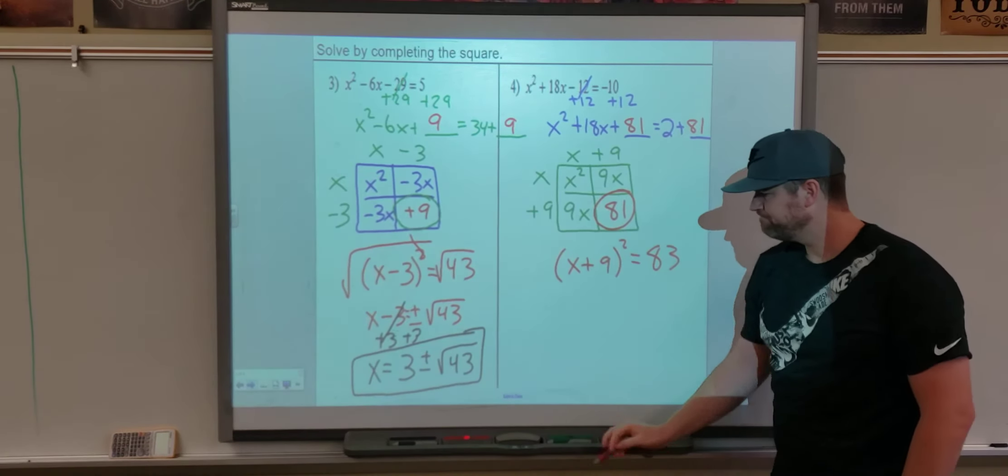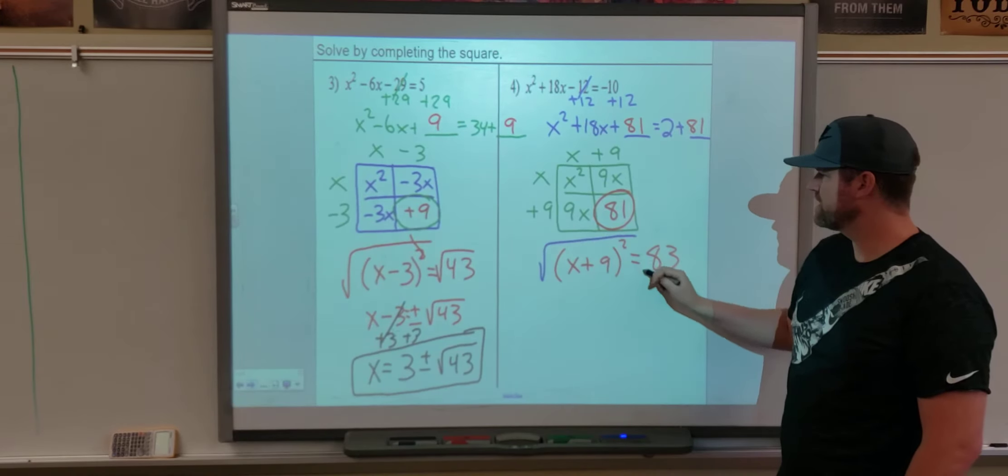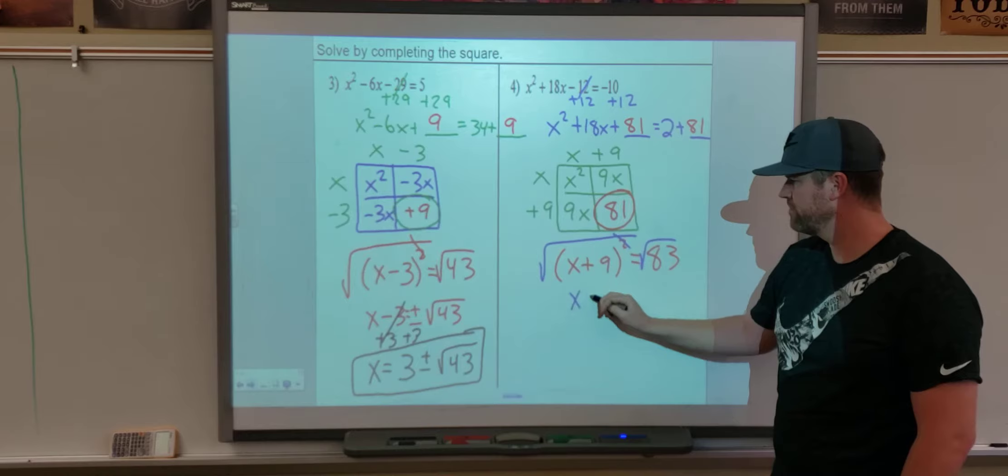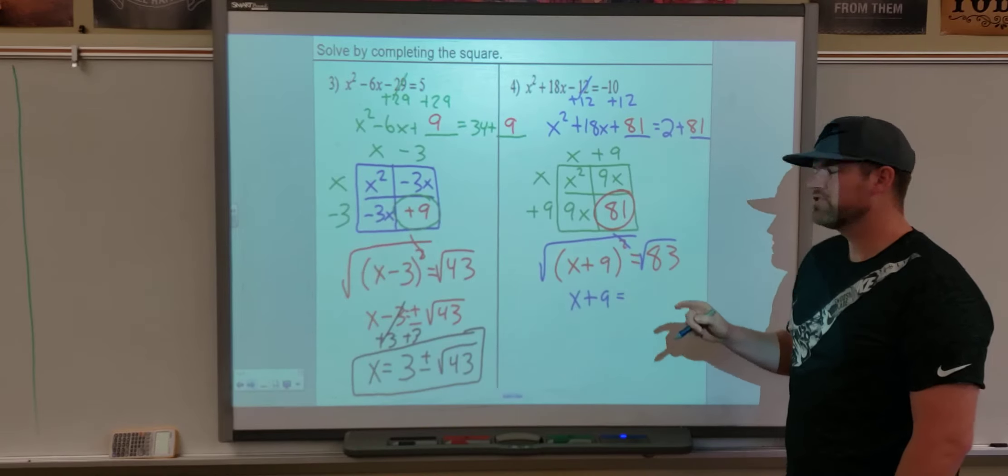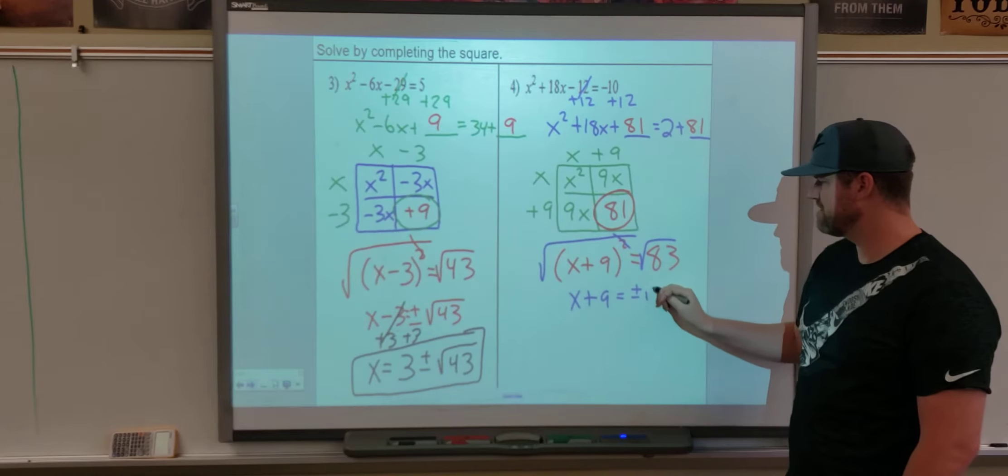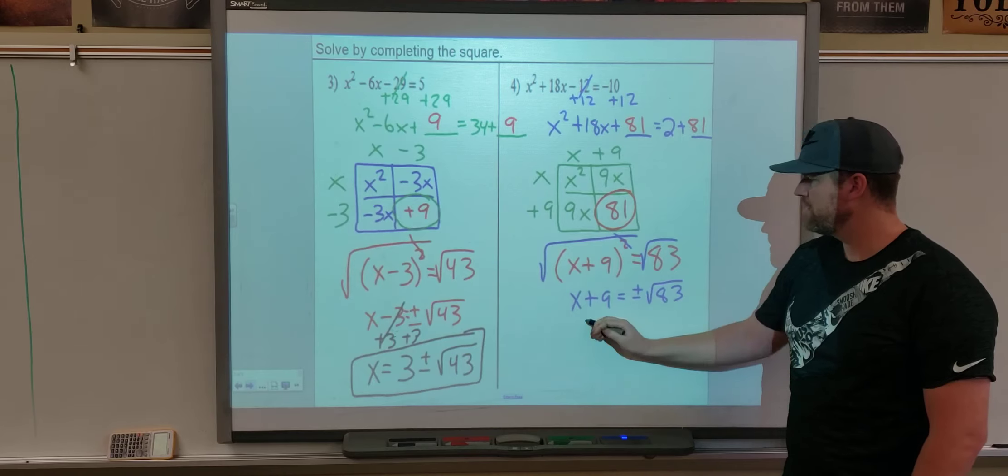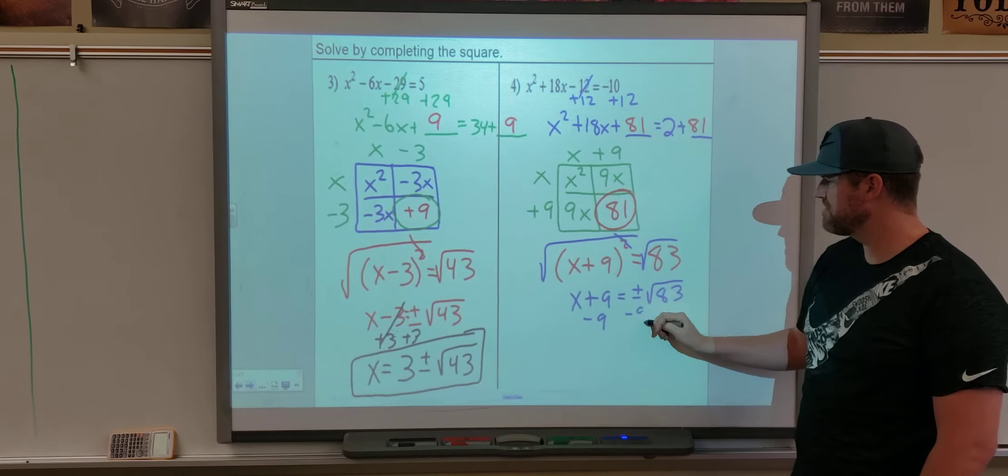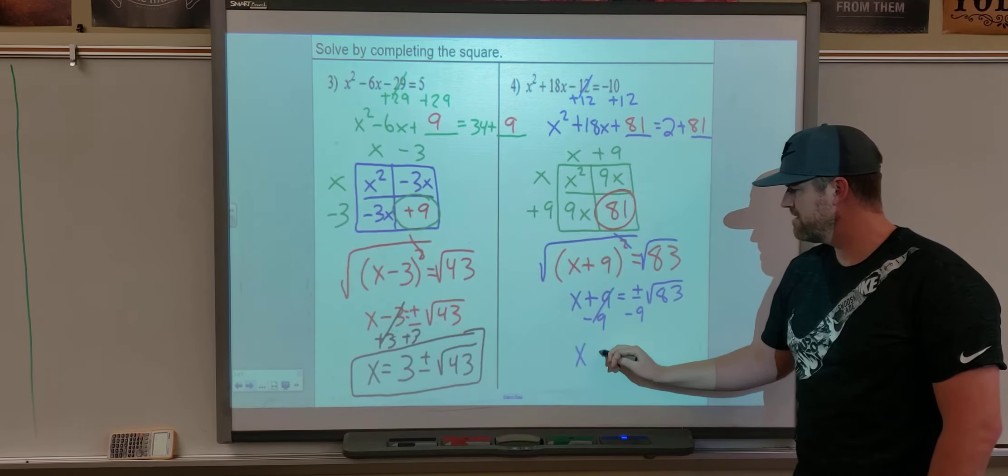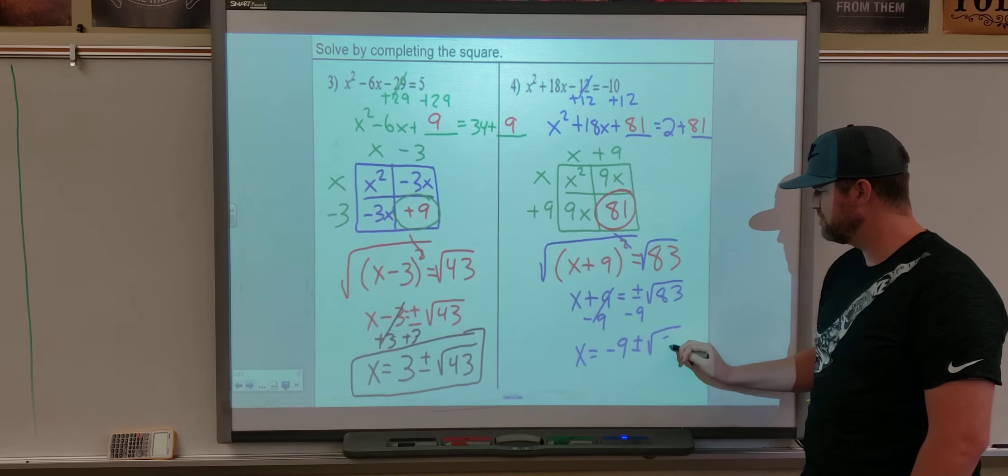Anyway, continuing on, once we have that perfect square, we're going to take the square root. I can try the factor tree with 83, but 83 is also a prime number, so we're going to leave that as square root 83. Don't forget your plus minus. And then finally, subtract 9 on both sides, x equals negative 9 plus or minus square root 83.